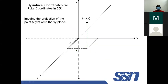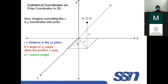Cylindrical coordinates are simply polar coordinates extended into 3D. The XY components are handled using R and theta just as in polar coordinates, while the Z value remains unchanged. R is found from X and Y using Pythagoras, theta is the angle from the X axis in the XY plane, and Z stays the same.